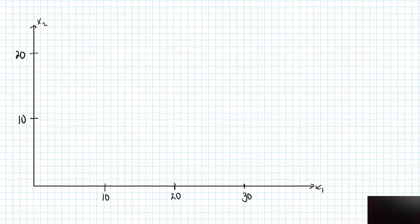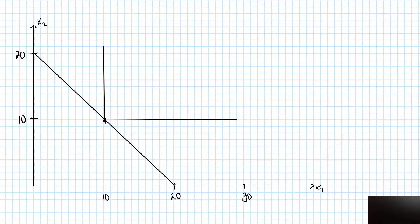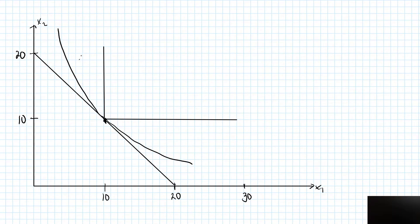Let's look at the comparison between perfect complements and perfect substitutes — looking at the indifference curves for this ten comma ten bundle for both of these extremes. If the goods are perfect substitutes, then the indifference curve is a straight line; in this example I'm willing to trade them in a one-to-one ratio, and the slope is equal to minus one. If the goods are perfect complements, the indifference curve is this L-shaped figure. In most cases, my goods will be somewhere in between perfect substitutes and perfect complements, so my indifference curve will look something like a smooth curve. If the goods are complements but not perfect complements, the indifference curve will be closer to the L-shaped curve, while if the goods are substitutes but not perfect substitutes, the indifference curve will be closer to the straight line.